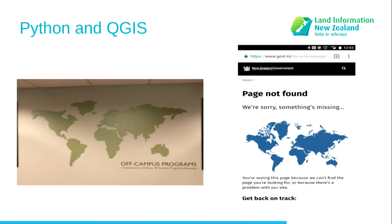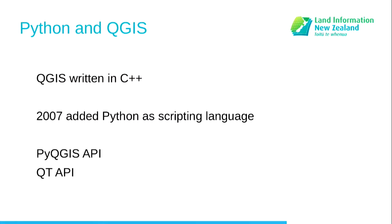QGIS itself was written in C++, but in 2007 they added Python as a scripting language, and a whole lot of people started adding plugins and it became a whole lot more popular — it's one of the reasons it's had its rise. Python's definitely a big part of that. 75% of the C++ classes are now available via the PyQGIS API. And because QGIS is built on top of Qt, you can use the Qt API to grab some more functionality.